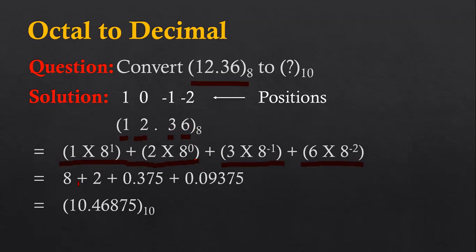These multiplication results are added to get the final outcome. The final outcome is 10.46875. So 12.36 is an octal number and its equivalent decimal number is 10.46875.